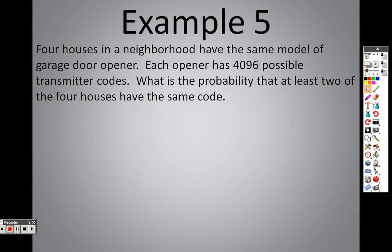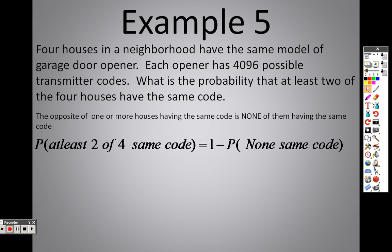So 4 houses in a neighborhood have the same model of garage door opener. Each opener has 4,096 possible codes. What's the probability that at least 2 of the 4 houses have the same code? Well, once again, the opposite is what we're looking for. The complement. The opposite of 1 or more of the houses having the same code is none of them.